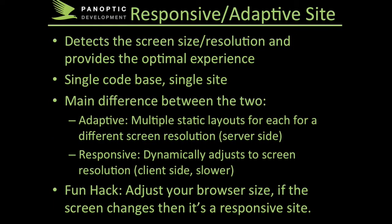The second bucket contains responsive and adaptive sites. In these sites, they detect the screen size and screen resolution and provide an optimal experience for that device. It's a single code base and a single site, which is different from having a mobile site where you have to maintain two separate sites. The main difference between responsive and adaptive is how they do the adjustment. In an adaptive site, the developer builds multiple static layouts for each screen resolution — so you'll have a home page for a mobile phone, another for a desktop, and possibly another for a tablet. When you access that site, the server determines what type of device you're on and provides the correct web page for that device.